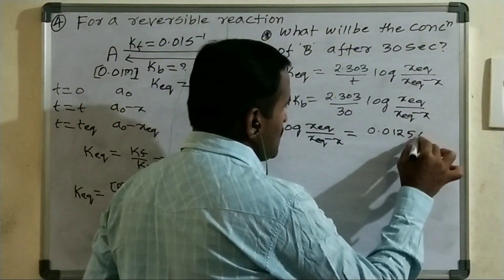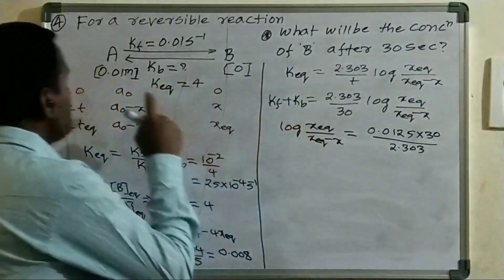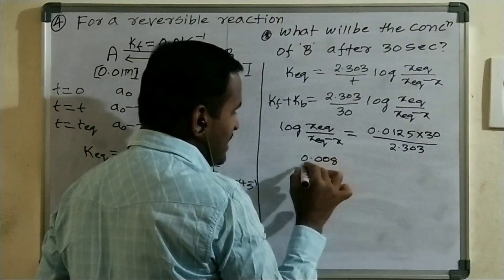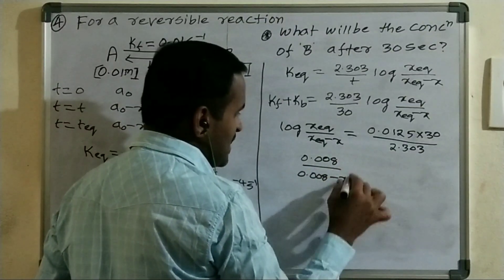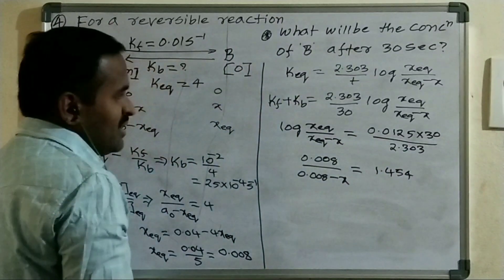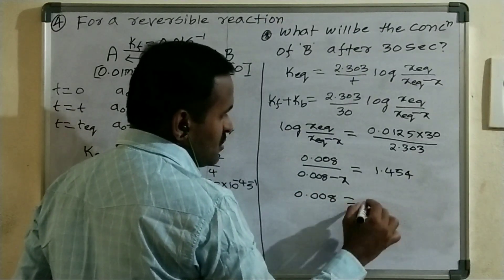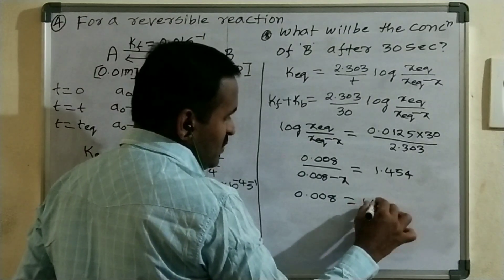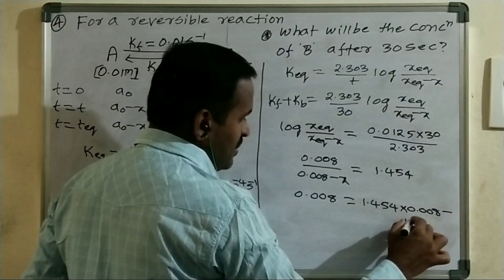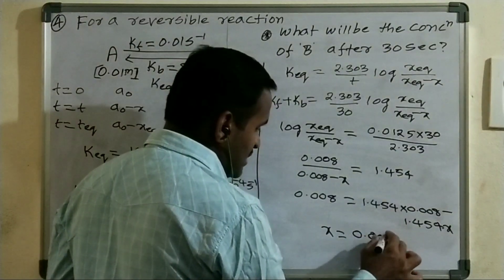After simplification: 0.008 = 1.454 × (0.008 − X), solving gives X ≈ 0.0025. So the concentration of B after 30 seconds is approximately 0.0025 M.